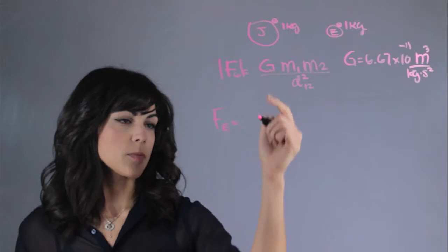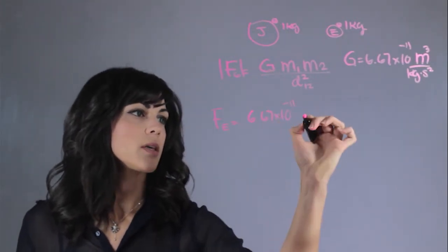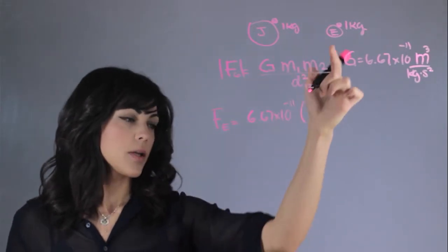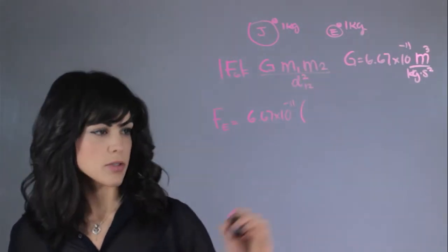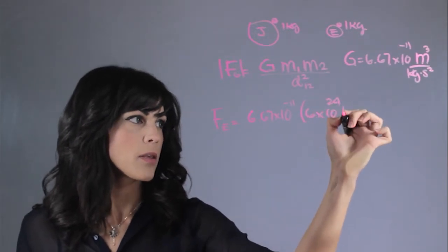Let's plug it into the equation. We have 6.67 times 10 to the minus 11, and then this is times mass one, which is the mass of the Earth, and this is going to be 6 times 10 to the 24th kilograms.